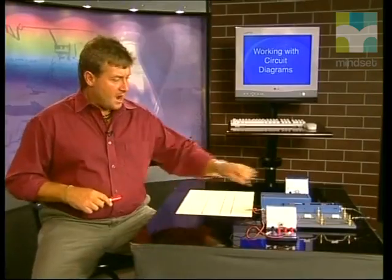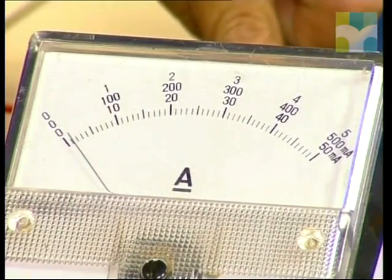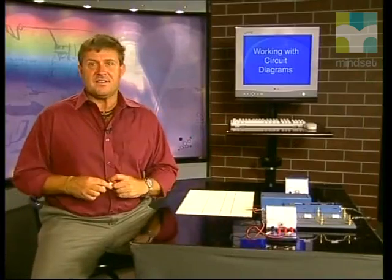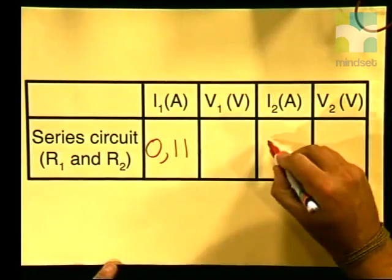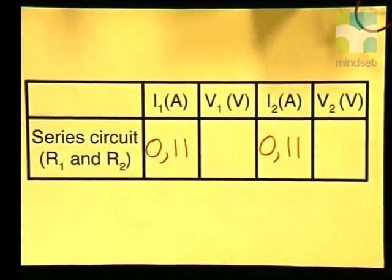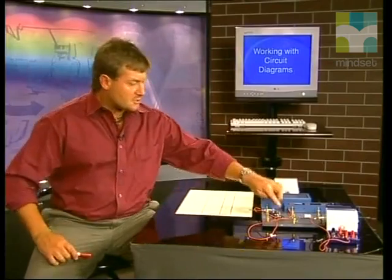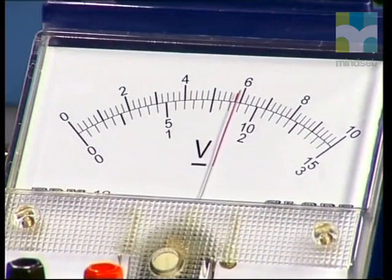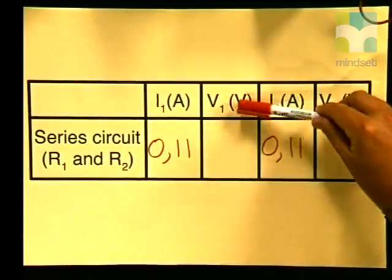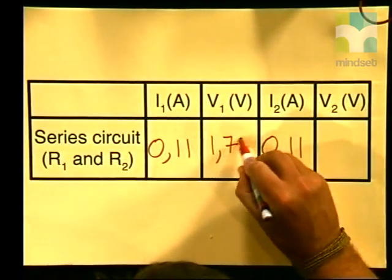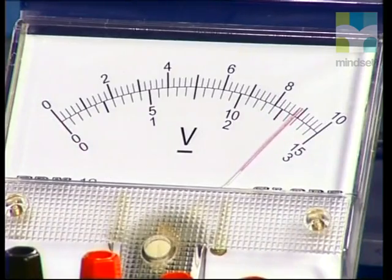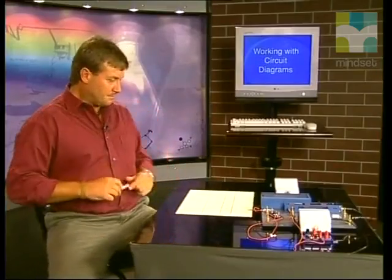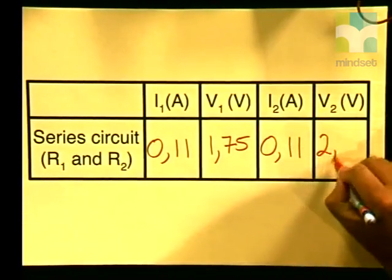Now let's take our second ammeter reading. Closing the switch — the ammeter is reading 0.11 amperes. I2, my second ammeter reading, is 0.11 amperes. I am now ready to take my first voltmeter reading. Closing the switch and letting it stabilize — using the bottom scale, my reading is 1.75 volts. V1: 1.75 volts. Now we take our second voltmeter reading, closing the switch and letting it stabilize on the bottom scale — the voltmeter is reading 2.65 volts. V2: 2.65 volts.